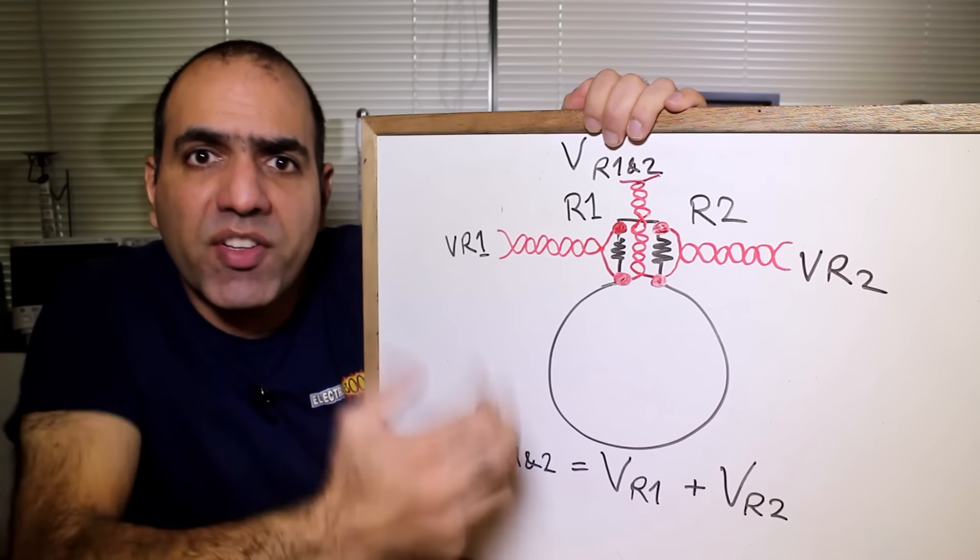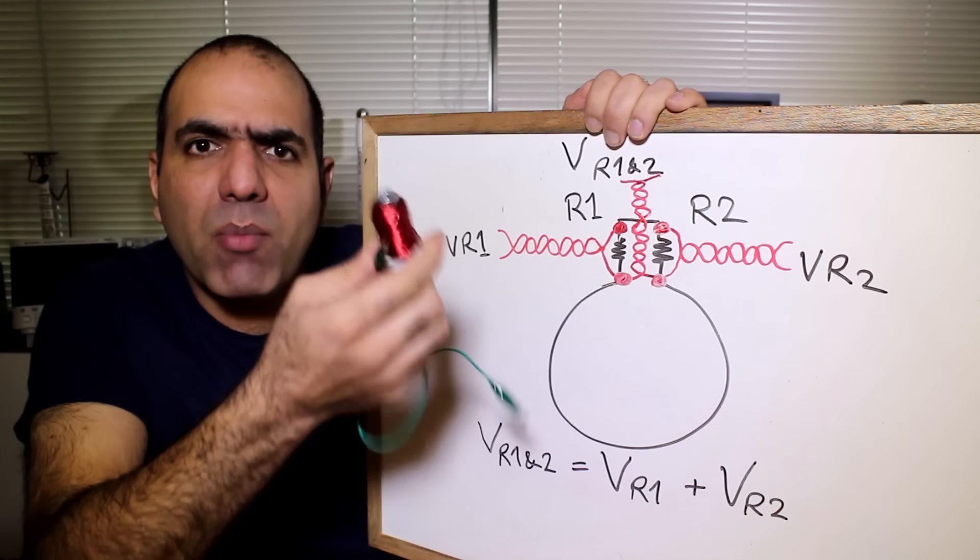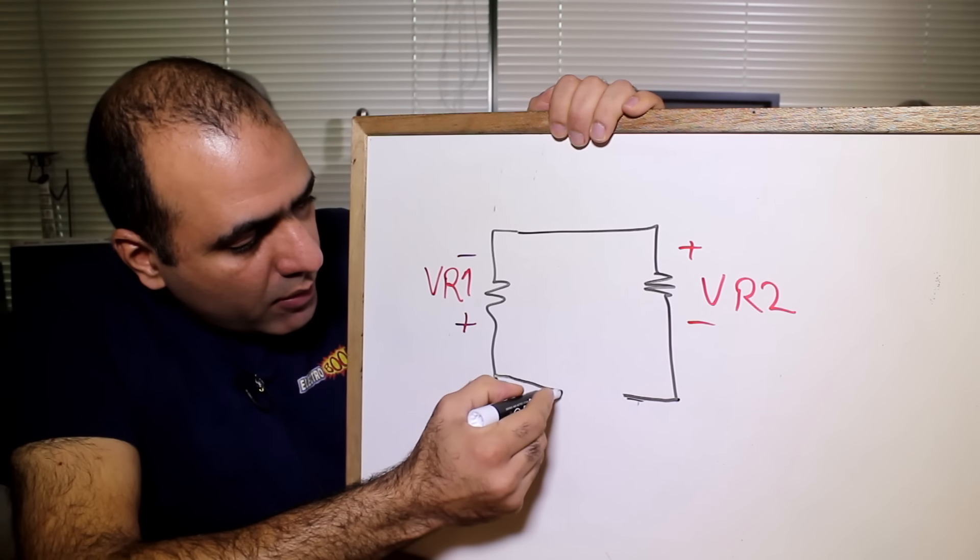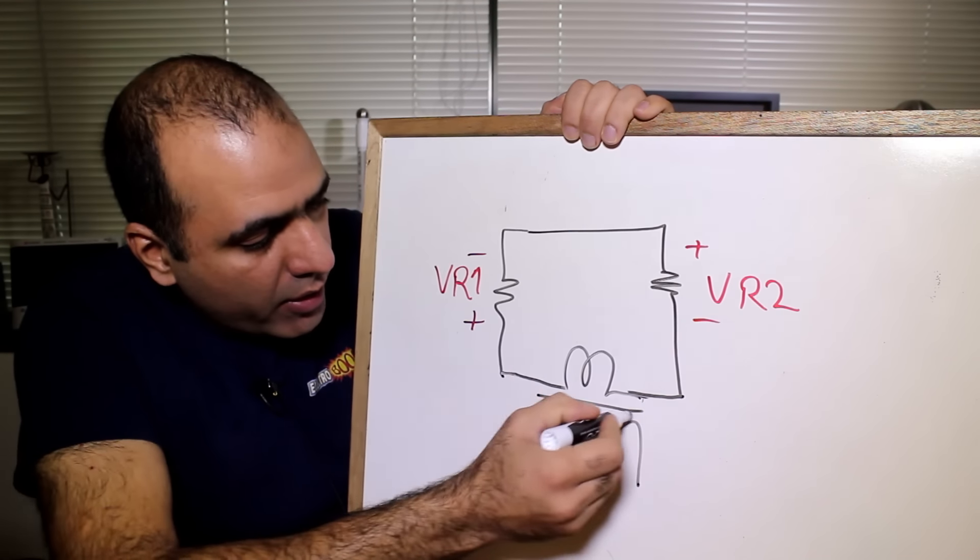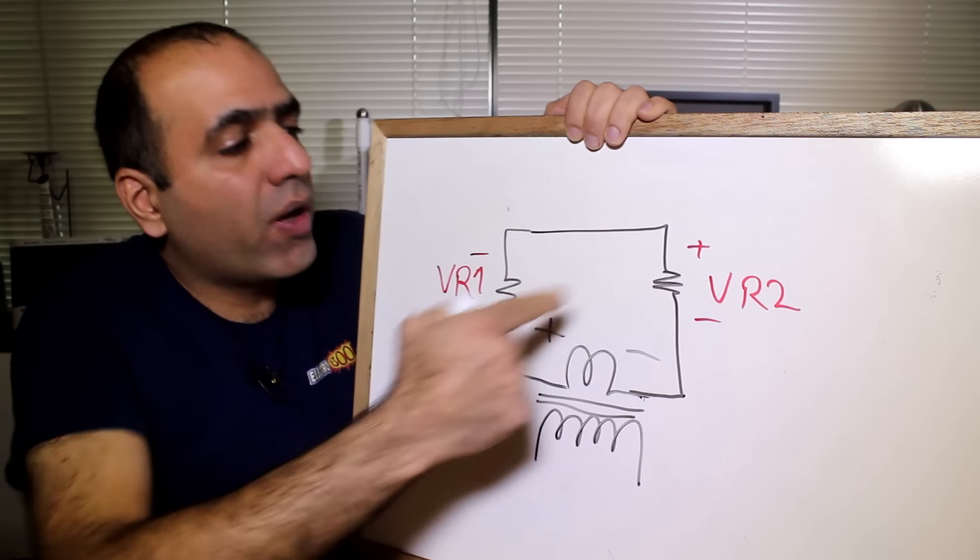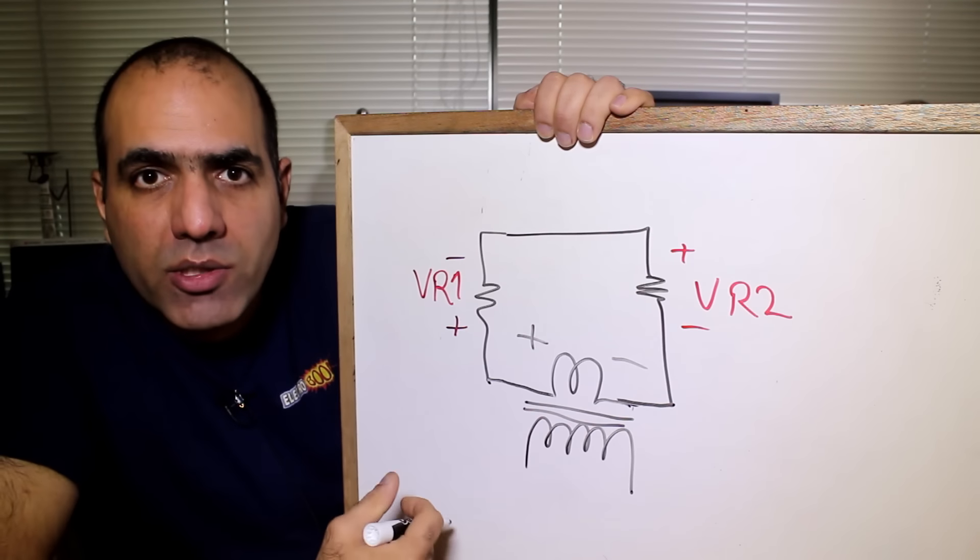The loop is the secondary of a transformer with the primary being my coil. Dr. Levin's model misses a transformer in the loop with the voltage across the winding equal to Vr1 plus Vr2. KVL holds.